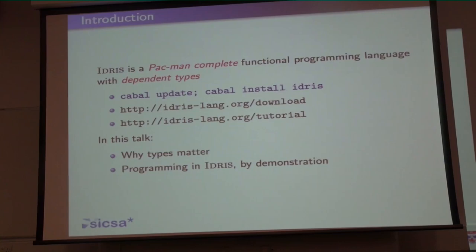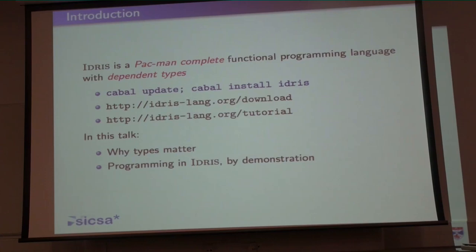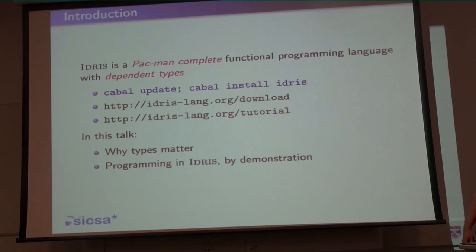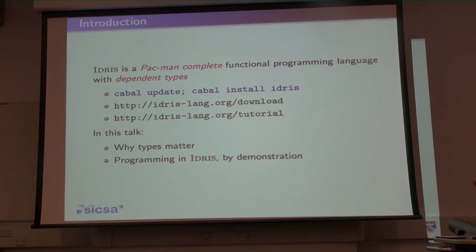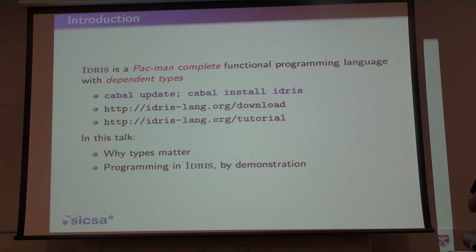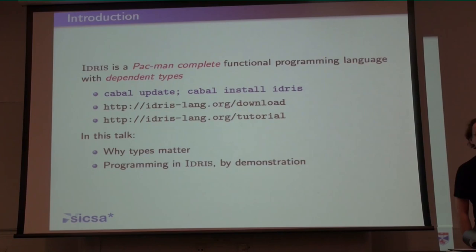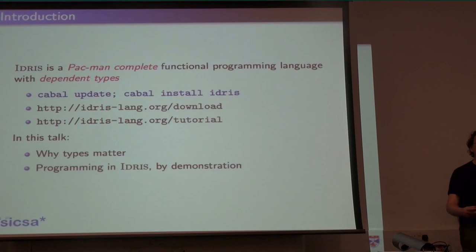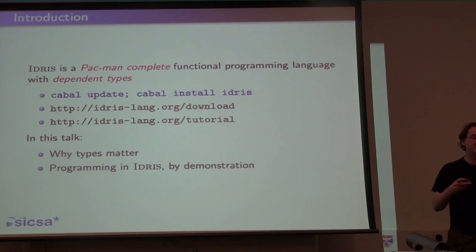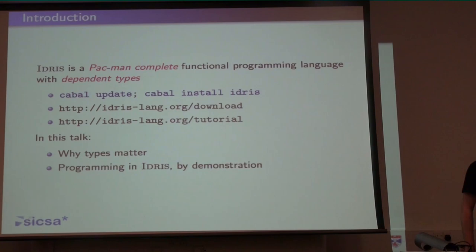Notice here I say that it's a Pac-Man complete functional programming language. Pac-Man complete was just introduced to me quite recently. I used to describe Idris as practical, and then I realized that it's not really for me to say if my language is practical. I tried 'general purpose', but nobody really knew what that meant. Pac-Man complete simply means that I think there's enough here to be able to implement Pac-Man if you really want to. It tells you a lot more than Turing completeness. Turing complete things include the Game of Life, C++ templates, and Whitespace — none of which are things you actually want to program in. Idris is Turing complete, but you can actually write software in it if you really want to.